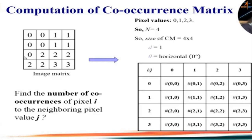The size of the co-occurrence matrix is decided by the number of gray levels in the image. The element C00 means the number of times gray level 0 appears to the right of gray level 0. Similarly, C22 means the number of times gray level 2 appears to the right of gray level 2, and C30 means the number of times gray level 0 appears to the right of gray level 3.